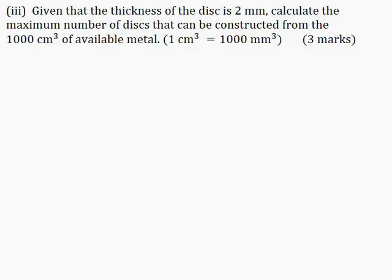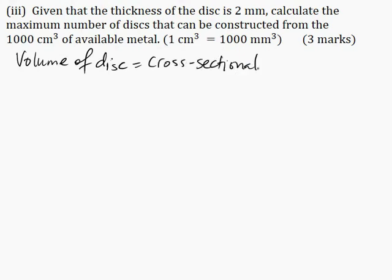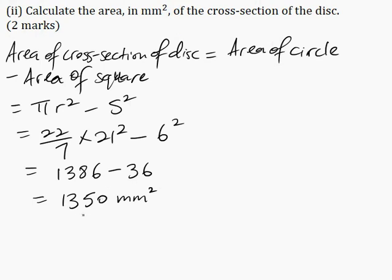Part 3: Given that the thickness of the disk is 2 mm, calculate the maximum number of disks that can be constructed from 1000 cm³ of available metal, for 3 marks. The conversion factor given is 1 cm³ equals 1000 mm³. The volume of the disk equals the cross-sectional area multiplied by the thickness. From part 2, the cross-sectional area was 1350 mm².